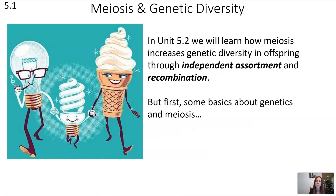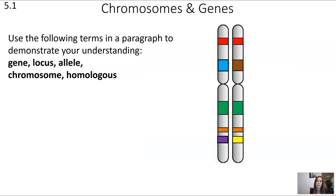Now let's dive into unit 5.1, which is focusing on meiosis. In unit 5.2 we're going to learn about how meiosis increases genetic diversity, specifically through independent assortment and recombination. But in this unit, we're just going to get some basics about genetics and meiosis, starting with the terms gene, locus, allele, chromosome, and homologous.